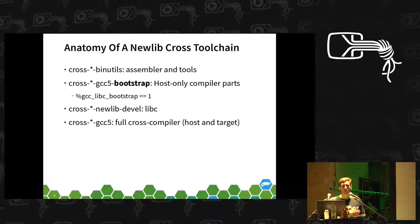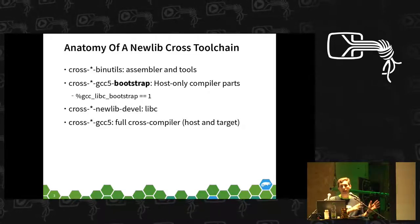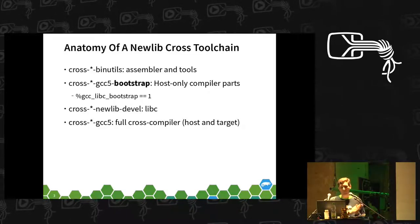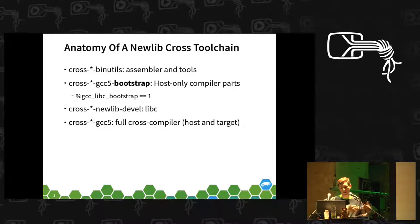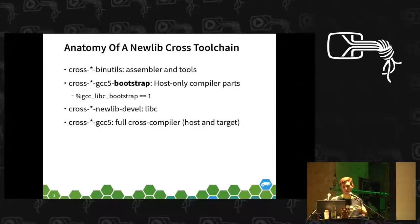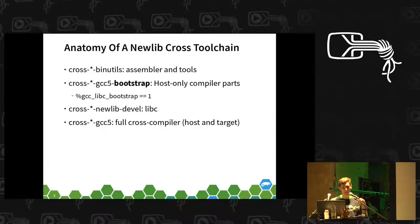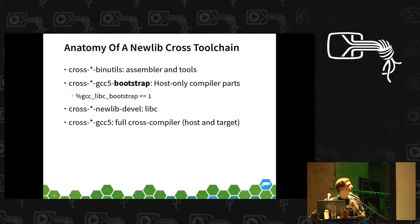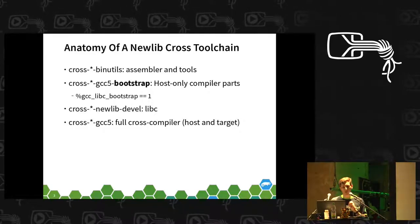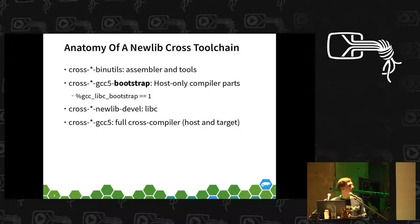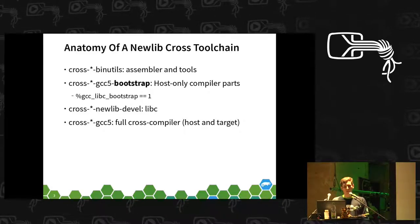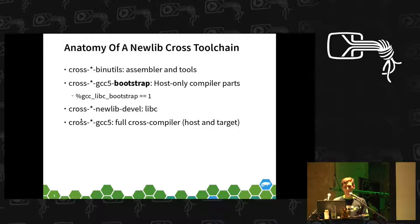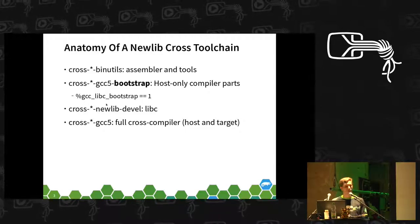Usually you would use the binutils package, build your C library, and then build a compiler package. But in this case, what I was doing is inserting a special bootstrap stage controlled by a variable named gcc_libc_bootstrap.